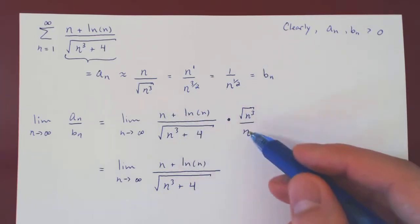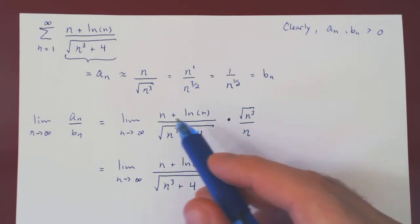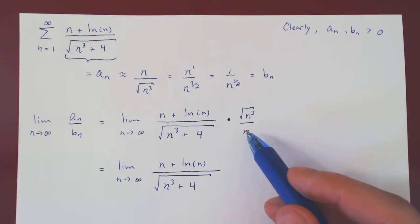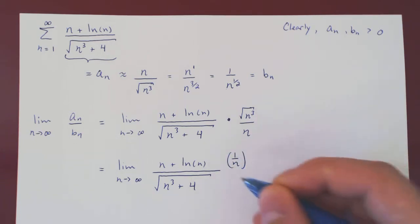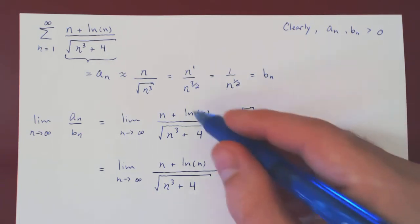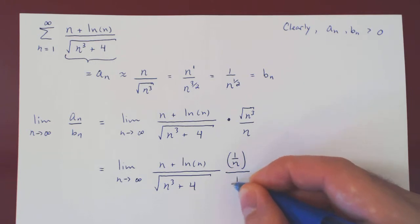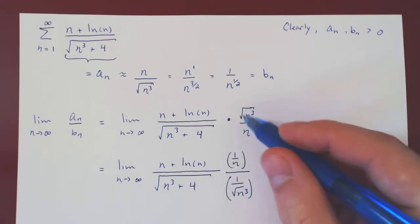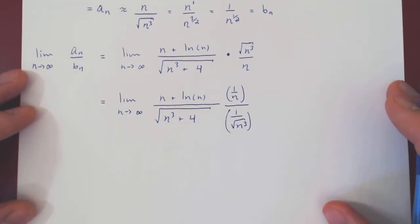And I want to pair up this n with this n, and this square root of n cubed with this square root of n cubed. Well, if you think here we are dividing n plus ln of n, the whole thing, by n. Well, it's the same as multiplying this by 1 over n. And here we are multiplying the fraction by root of n cubed. That's the same as dividing by 1 over root of n cubed. If you can go back and check, if you do 1 over 1 over root of n cubed, that's just times root of n cubed. And now we can multiply out, and we'll have, hopefully, a simple enough limit.